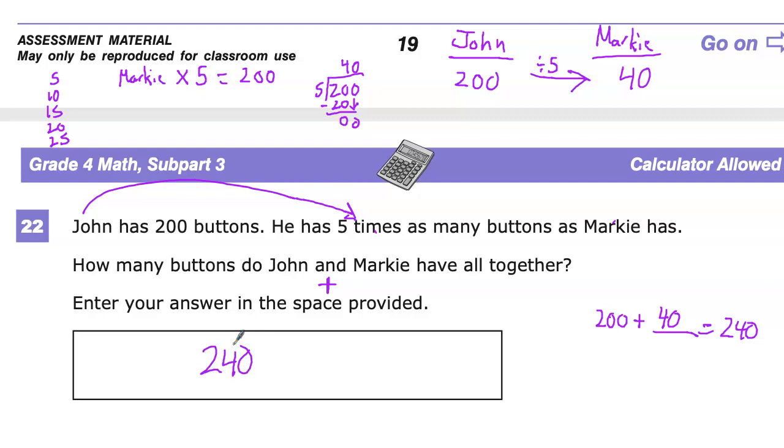What's difficult about this question? There's a few things. Number one, you have to understand perspective. John has 200 buttons. He has five times as many as Markie, which means Markie has less buttons. So this number has to be less than this one. Otherwise, it's not set up the correct way.